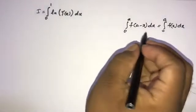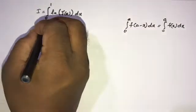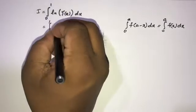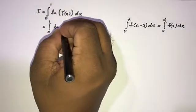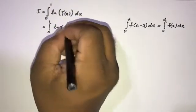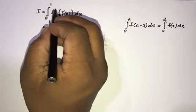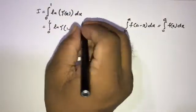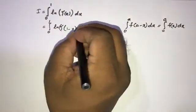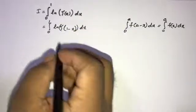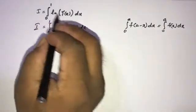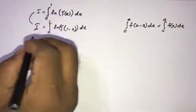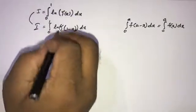According to this formula, we can write the integral from 0 to 1 of natural log of gamma of (1 minus x) dx. This is also equal to I, and now I am going to take the sum of these two integrals.